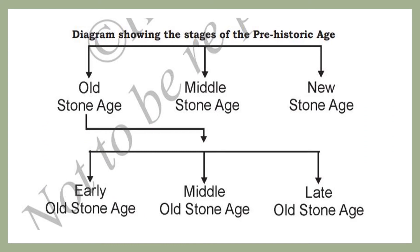This diagram shows the stages of the prehistoric age. There are three stages: the Old Stone Age, the Middle Stone Age, and the New Stone Age. The Old Stone Age is further divided into three parts: the Early Old Stone Age, the Middle Old Stone Age, and the Late Old Stone Age. These are the important stages of the prehistoric age.